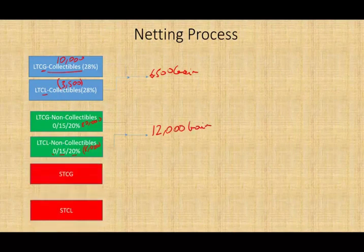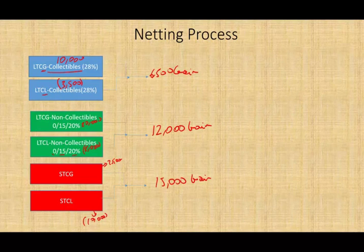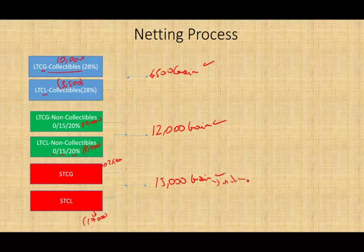Then you net the short-term capital gains and short-term capital losses. For example: a short-term capital gain of $25,000 and a short-term capital loss of $10,000 gives a net gain of $15,000. If you end up with a gain in all three groups, you pay taxes on each gain separately: 28% (or lower ordinary rate) for collectibles, 0/15/20% for non-collectible long-term, and ordinary rate for short-term.